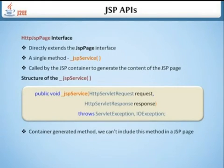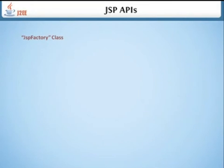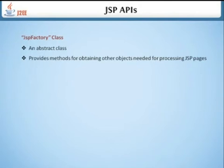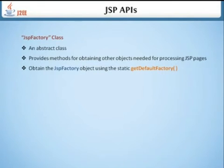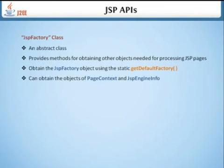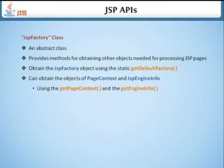JspFactory is an abstract class that provides methods for obtaining options needed for processing JSP pages. You can obtain the JspFactory instance using the static getDefaultFactory method. Using the factory, you can obtain a PageContext object and JspEngineInfo using the getPageContext and getEngineInfo methods. The structure shows getEngineInfo and getPageContext as its methods.